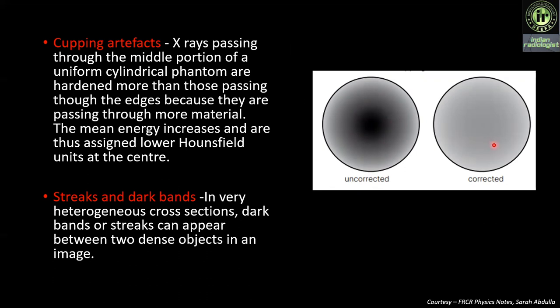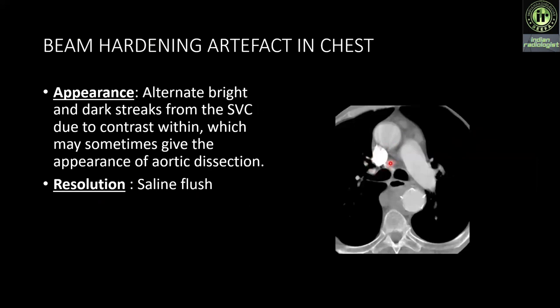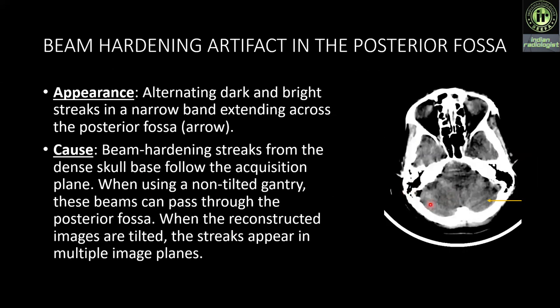Streaks and dark bands: in very heterogeneous cross-sections, dark bands or streaks can appear between two dense objects in an image. This is beam hardening artifact in the SVC, where we see bright and dark streaks due to contrast within, which may sometimes give the appearance of cirrhotic depiction. This can be resolved by use of saline flush. Beam hardening artifact in the posterior fossa shows alternate dark and bright streaks extending across the posterior fossa, caused by beam hardening streaks from the dense skull base.